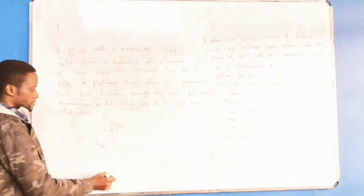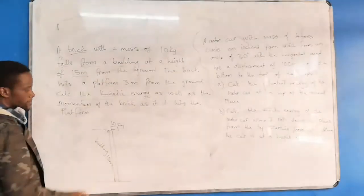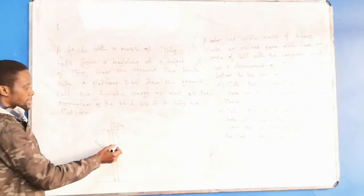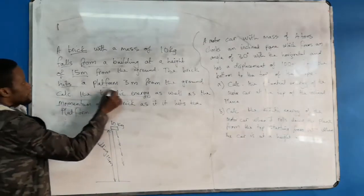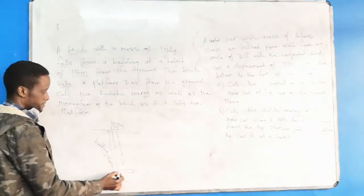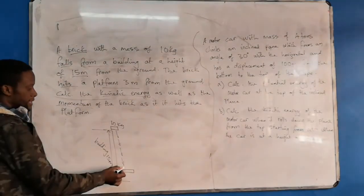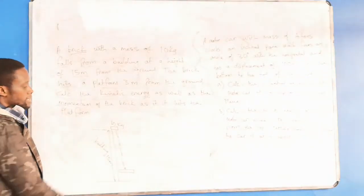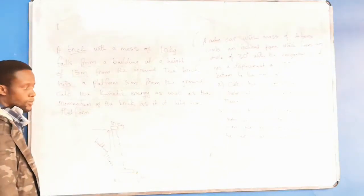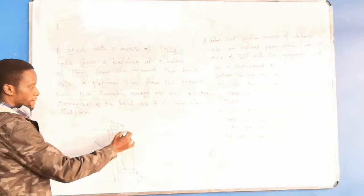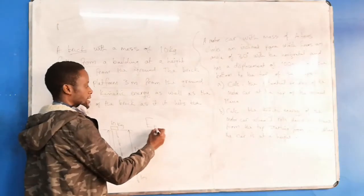The height is how many meters? 15 meters. From that point to that point, this brick is falling. The brick hits a platform. I don't know if it's a balcony or whatever it is, but there is a platform where the brick hits. And this platform is how many meters?